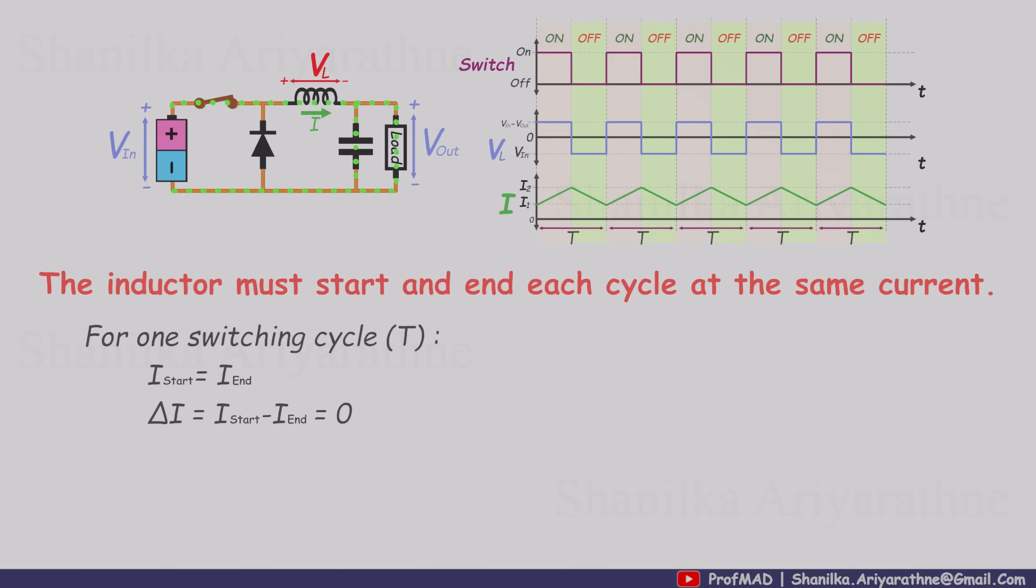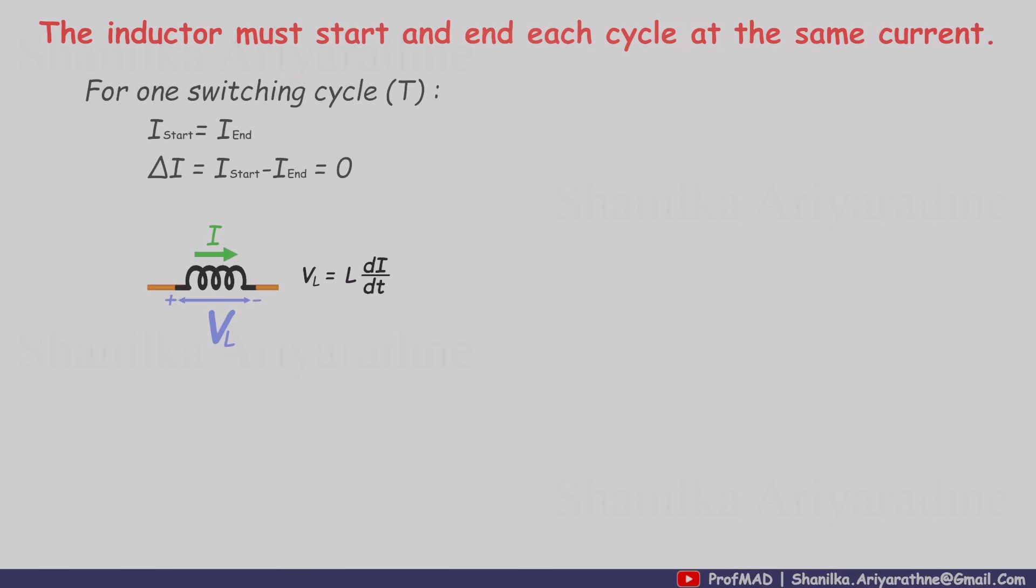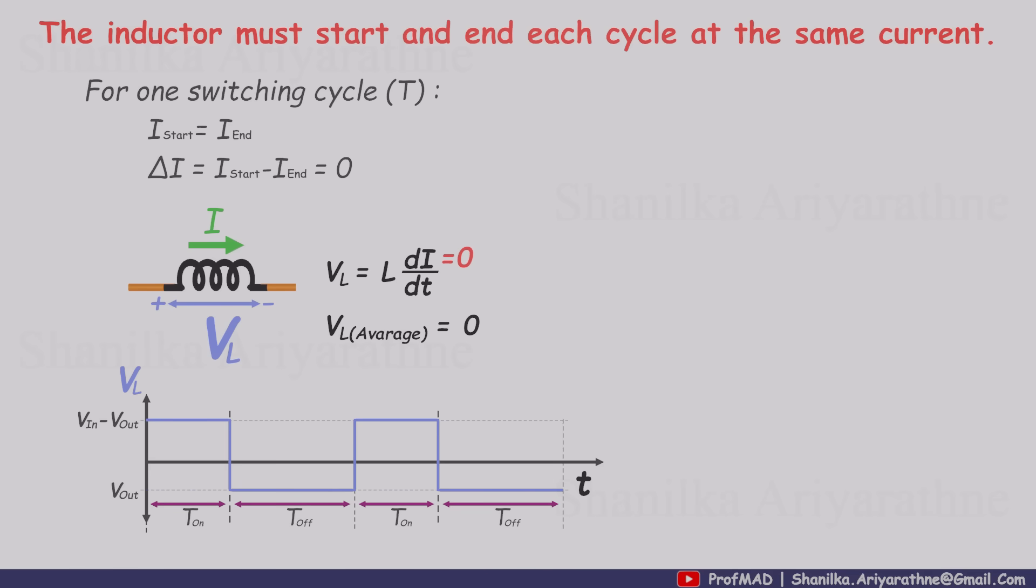And if the net change in current is zero, then the average voltage across the inductor over that same cycle must also be zero. Don't just memorize that, follow the logic. No net change in current means no net push from the inductor, so the average voltage across L has to cancel out. That means the positive inductor voltage during the on time and the negative inductor voltage during the off time must balance each other perfectly.